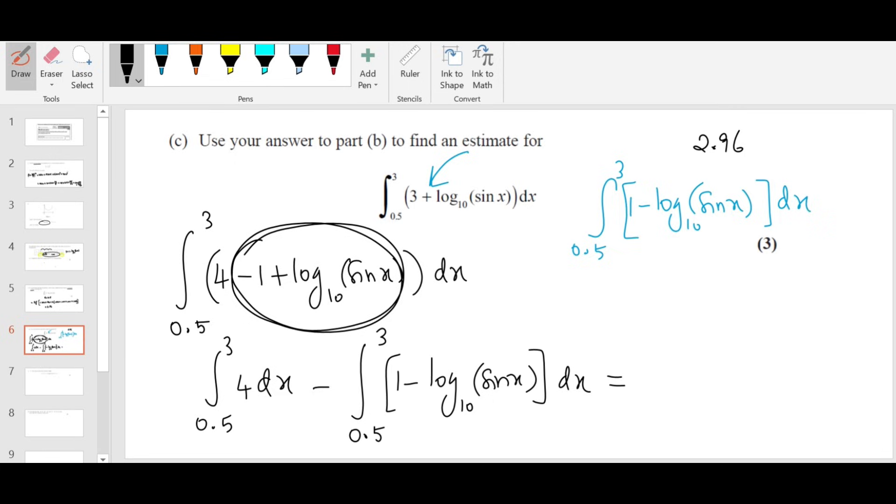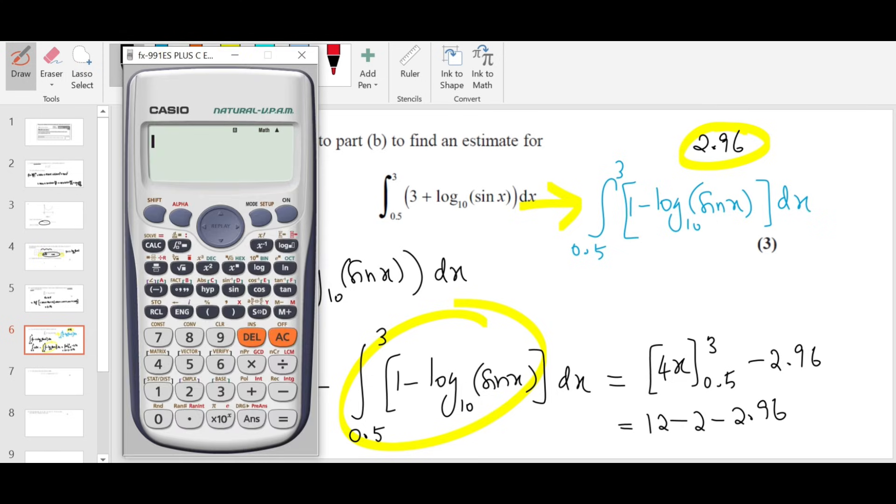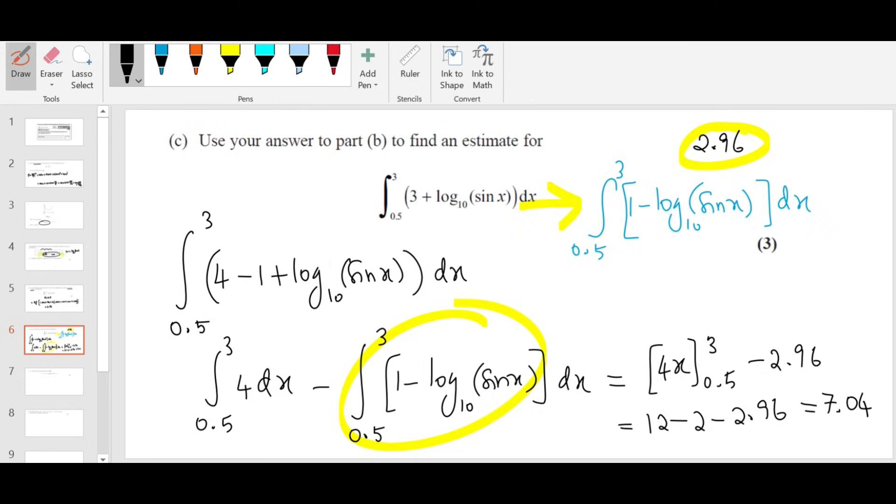So here, now I can use the value 2.96 because it looks like this, and the 4 dx, I integrate it normally. It's 4x and then you need to sub in the limits, minus 2.96. So you sub in the upper limit, 4 times 3 is 12, sub in the lower limit, 4 times 0.5, minus 2.96. So you get 12 minus 2 minus 2.96, which is 7.04.